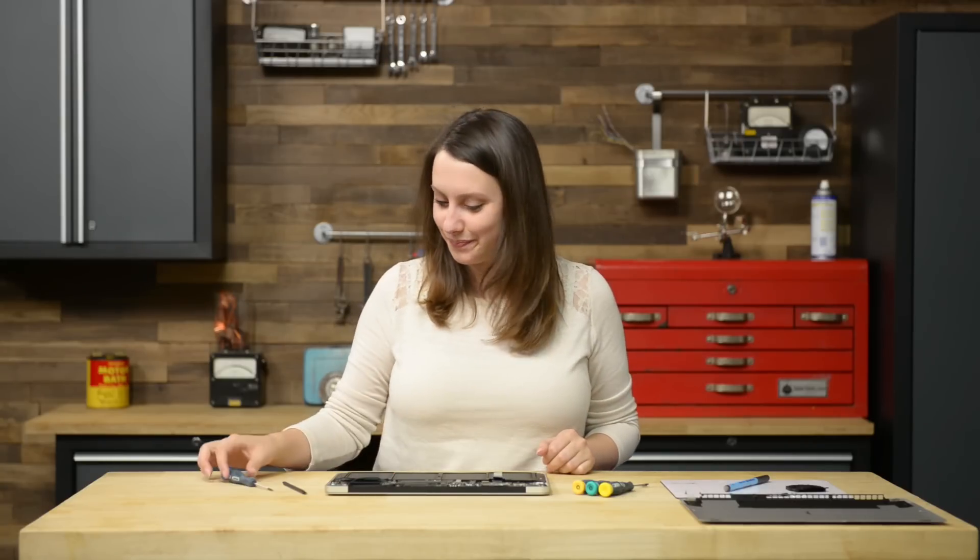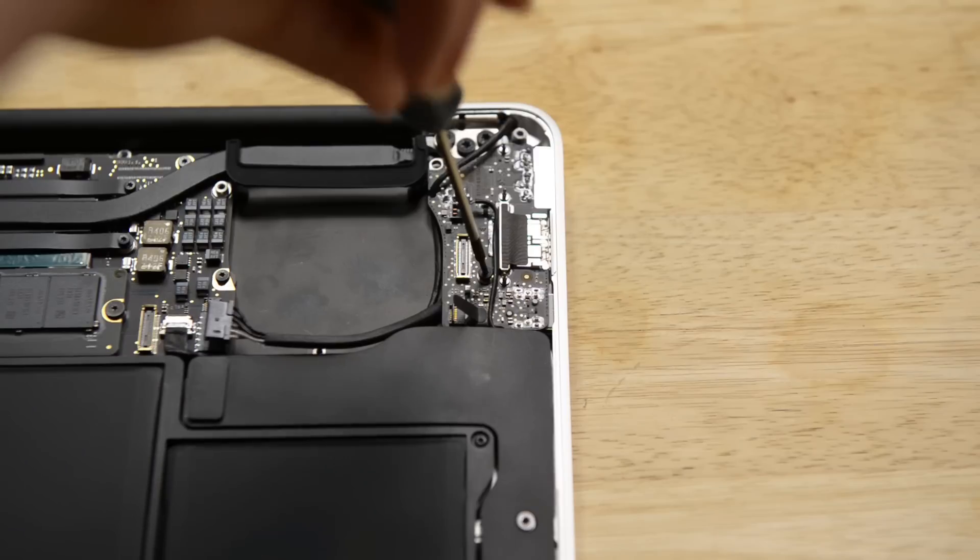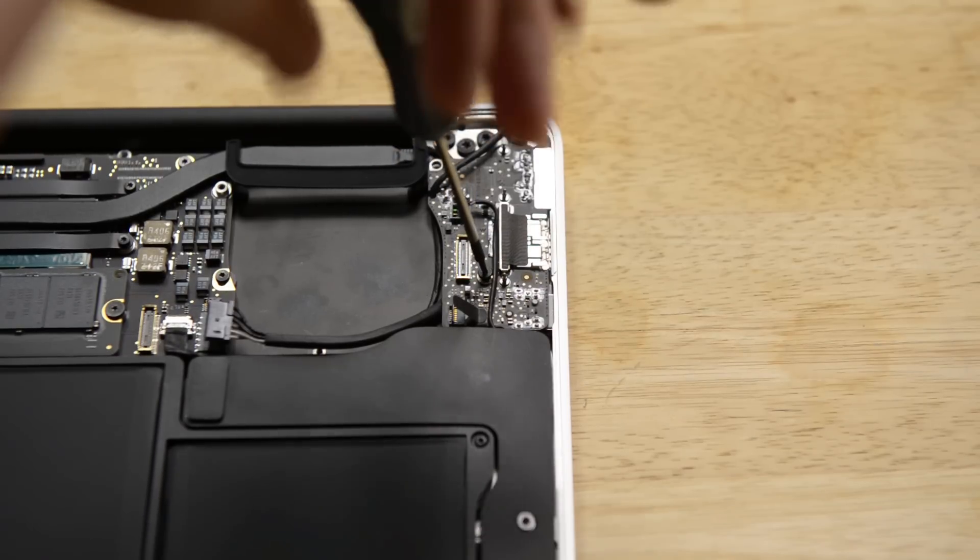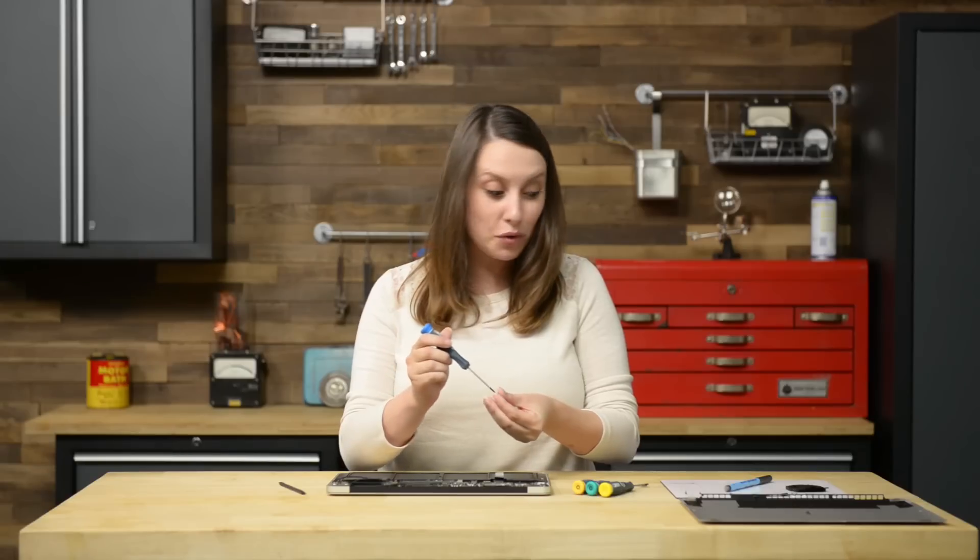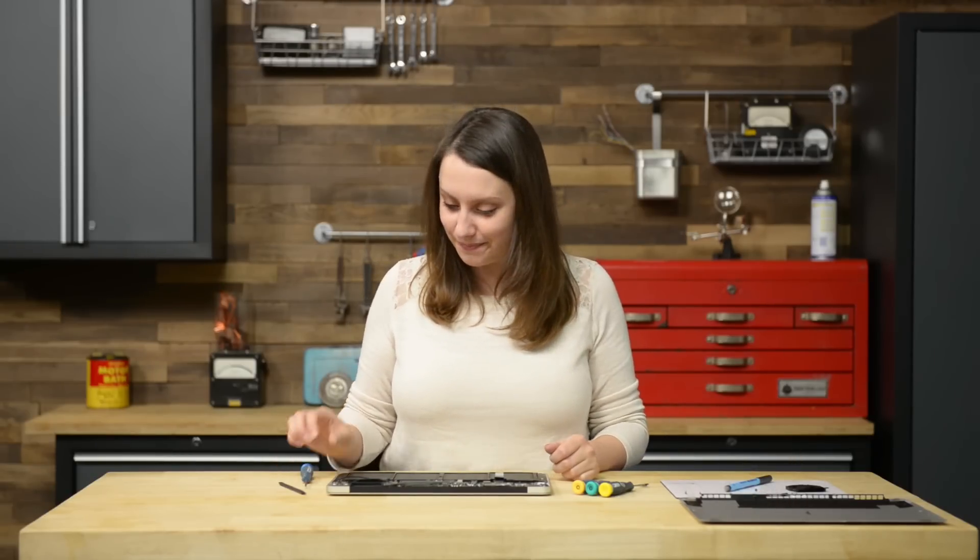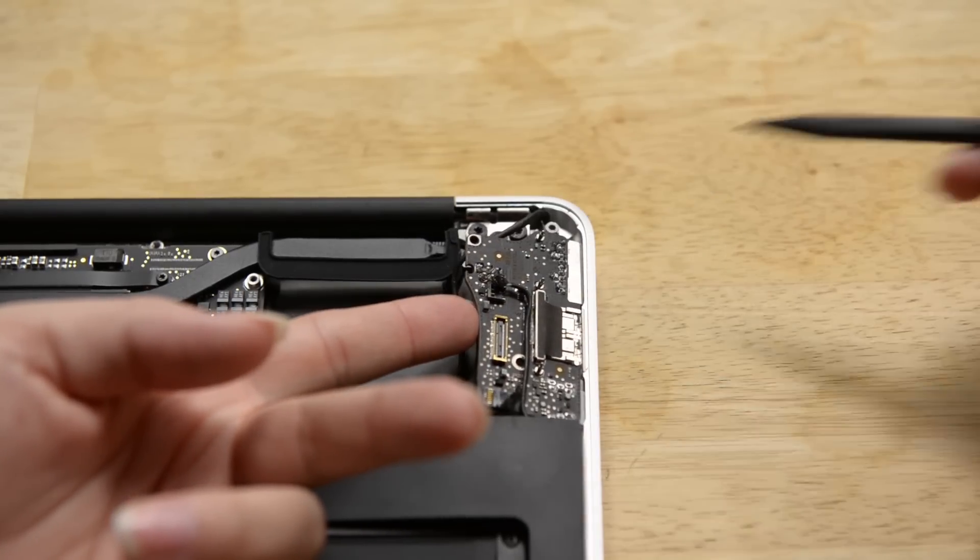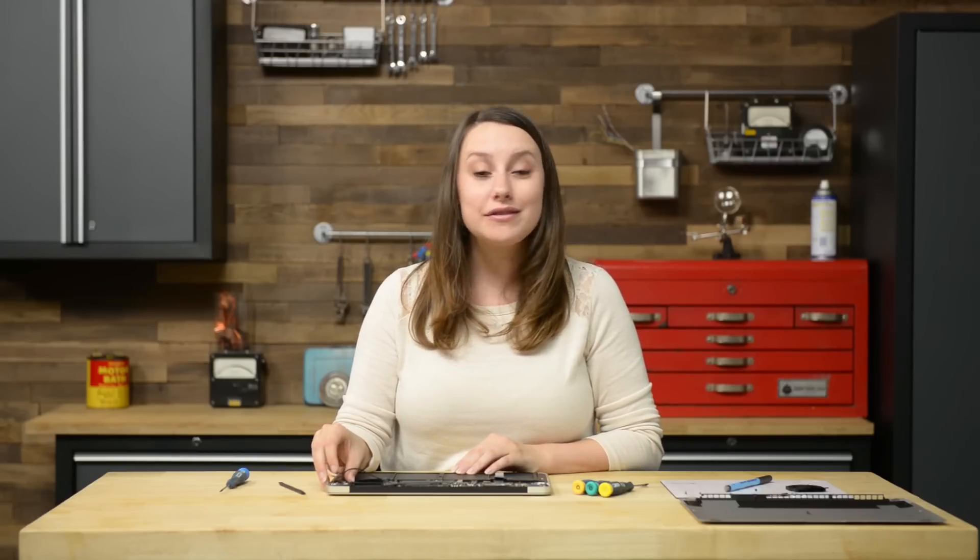The IO board is held in place by one T5 screw. Before you lift the IO board out of the rear case, gently de-route the camera cable from the notch on the IO board. Now you can lift the IO board from the logic board side and pull it free from the upper case.